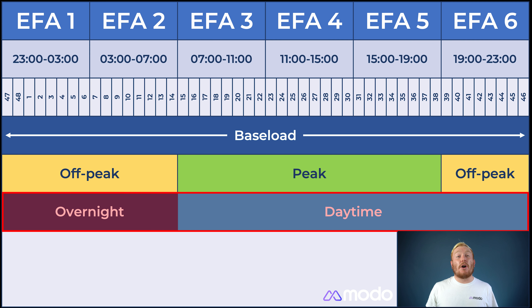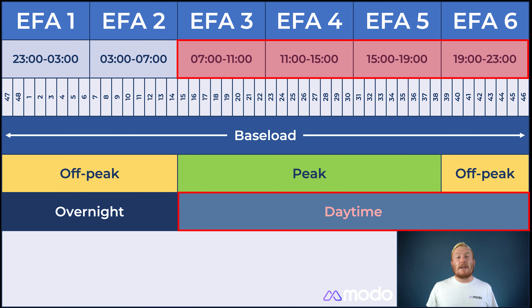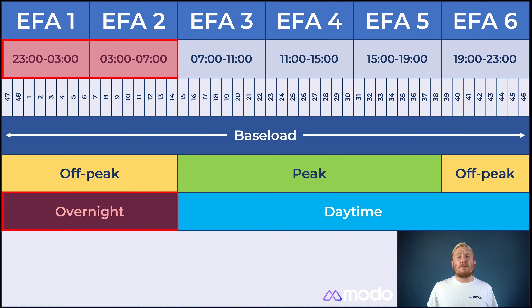Then there are daytime and overnight products. Daytime products run across IFA blocks 3 through 6, meaning from 7am until 11pm, while overnight products run across blocks 1 and 2, meaning 11pm until 7am.